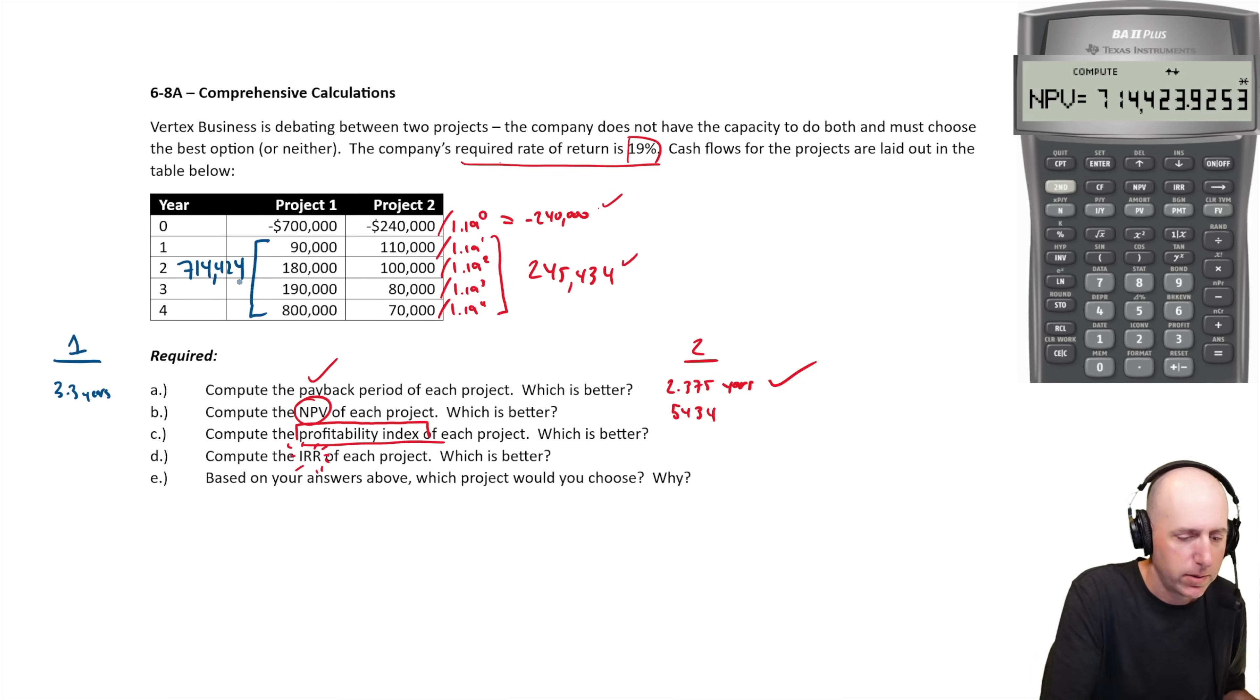The present value of the cash outflows is negative 700. So what's the net present value? Just combine them. It's 14,424, right? 714 minus 700 is 14,424. So a pretty big win for project one, leaving me better off here.